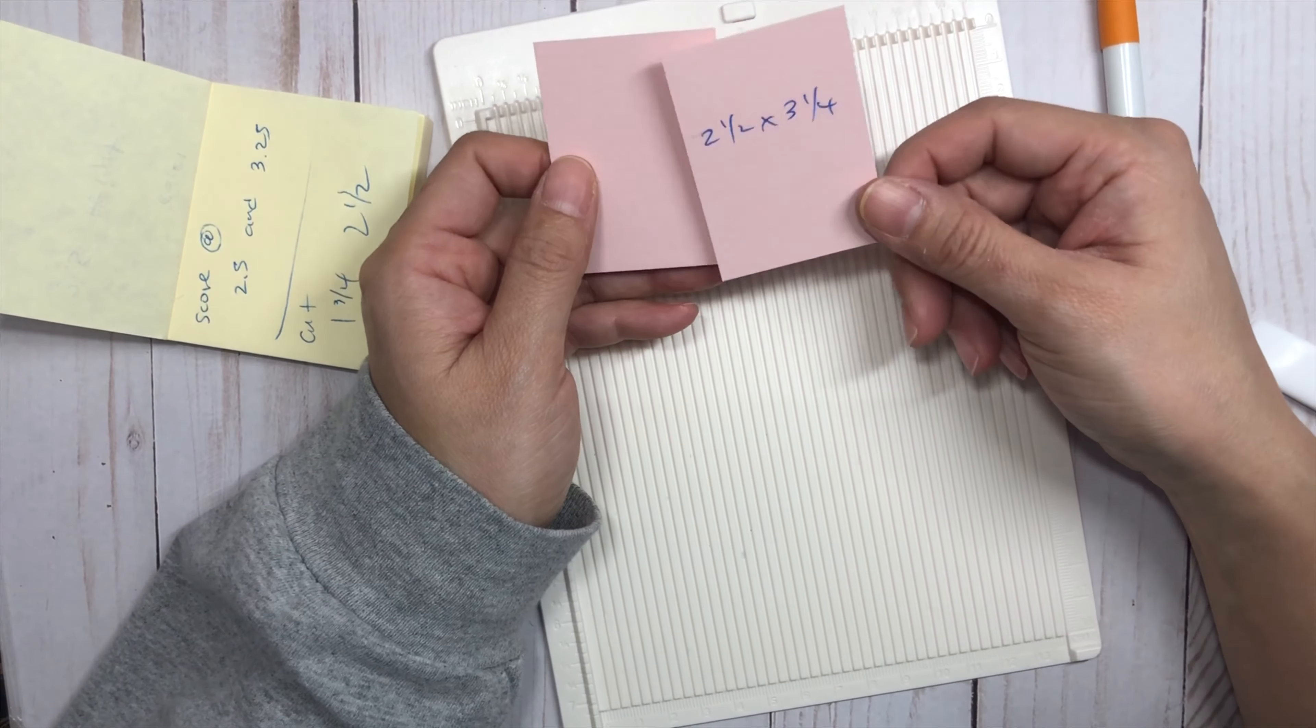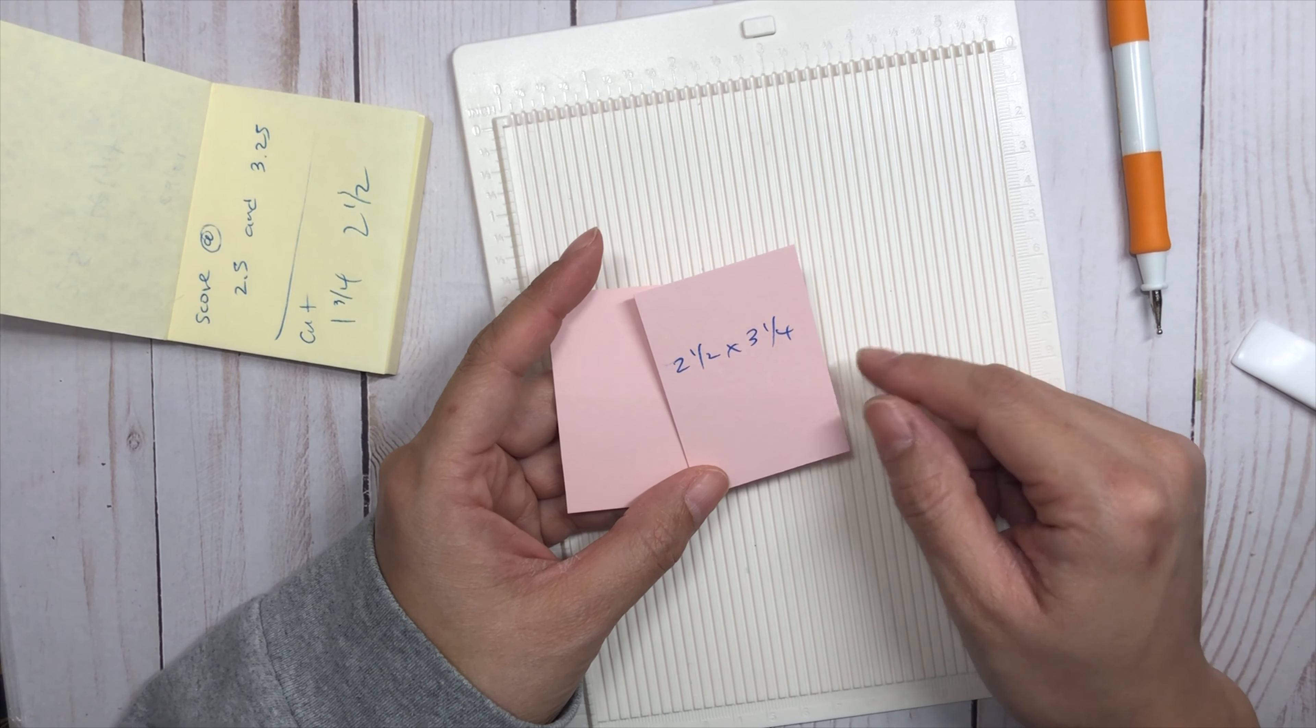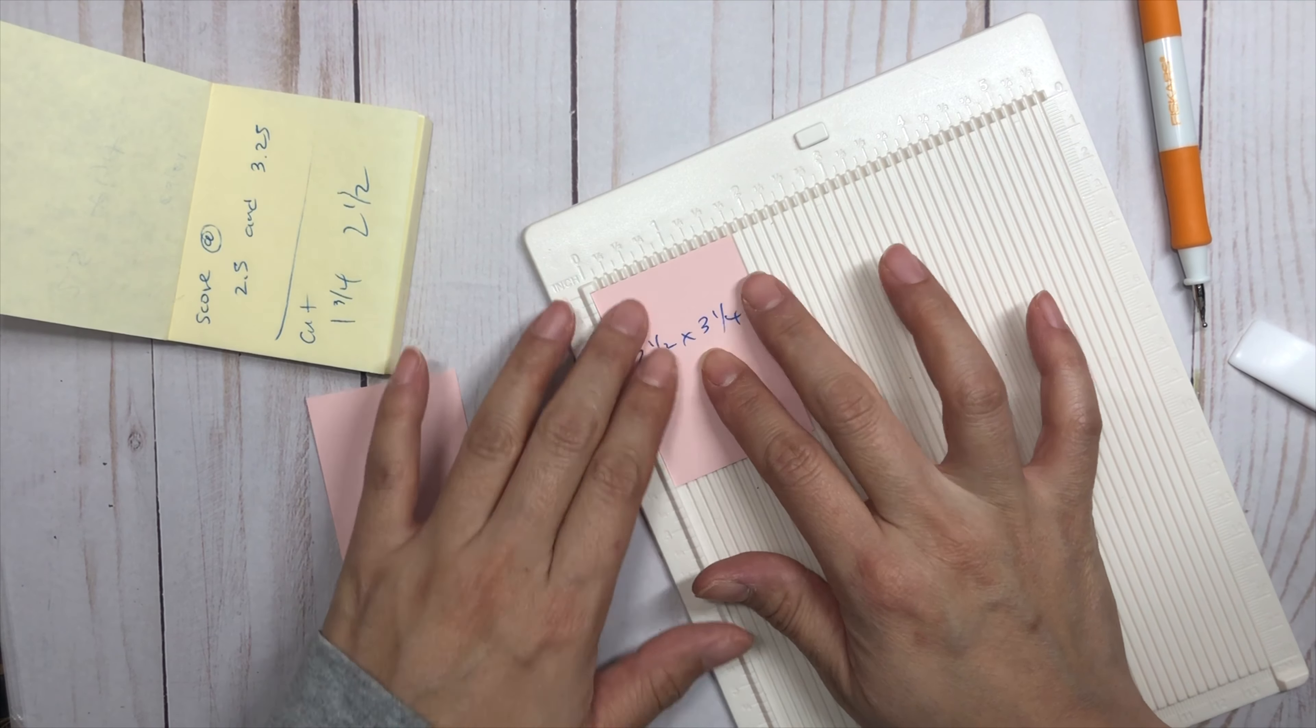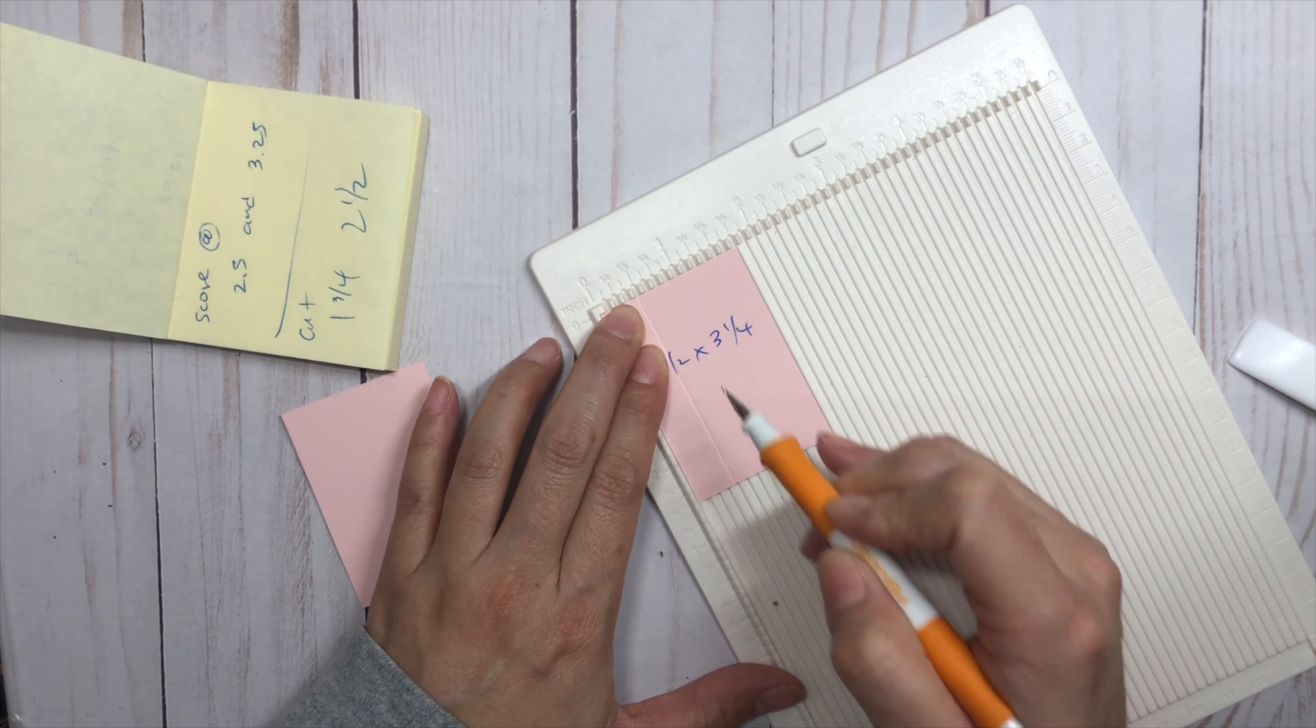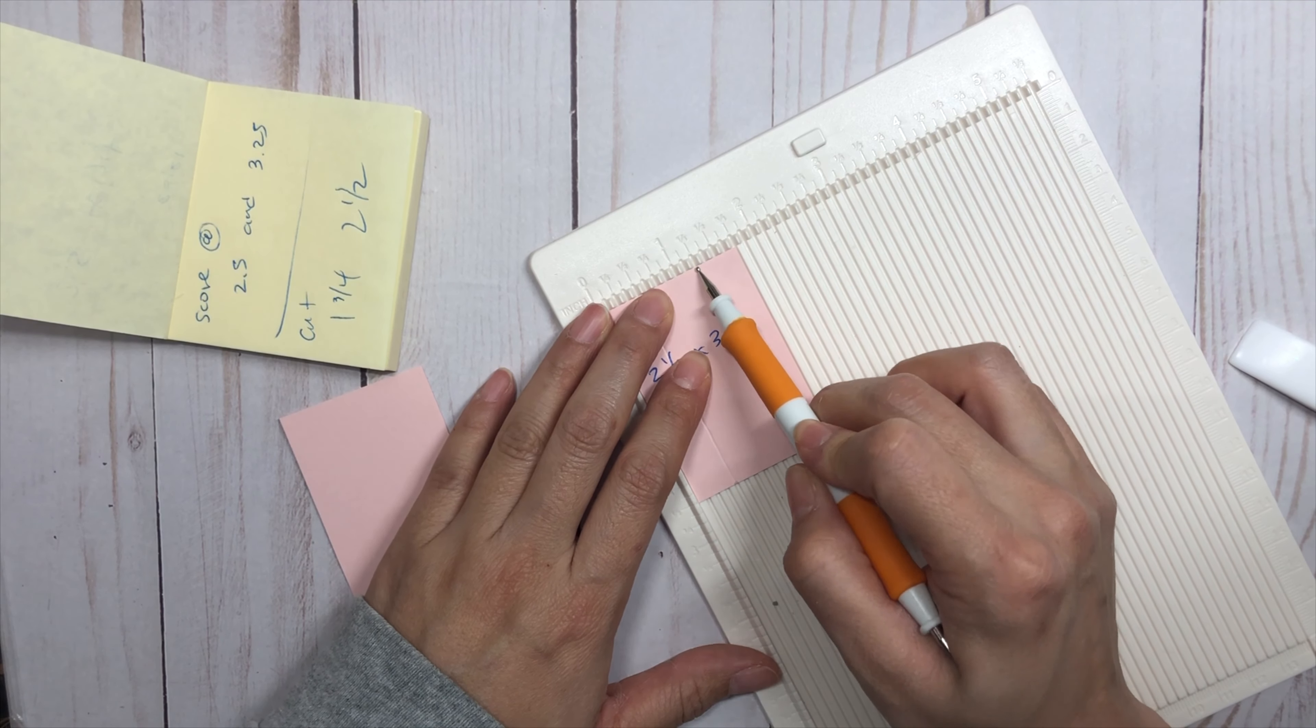And then we have the two pieces for the gussets, which I've already cut out. And this is at two and a half and three and a quarter, and we will score this at half an inch and then one and a quarter.